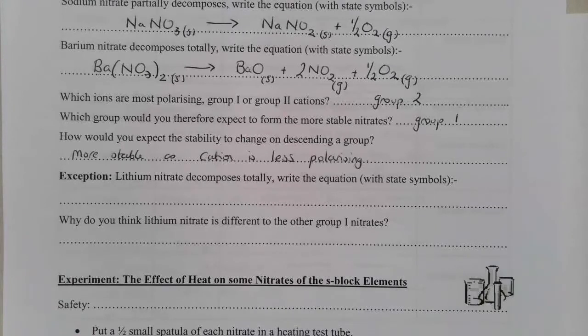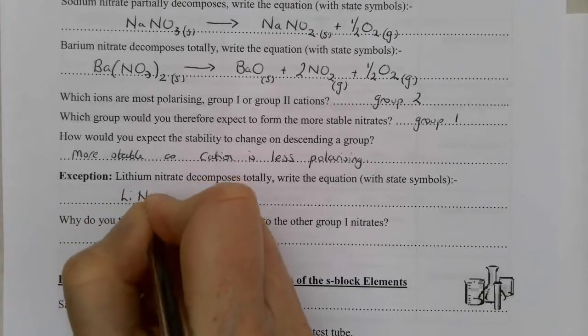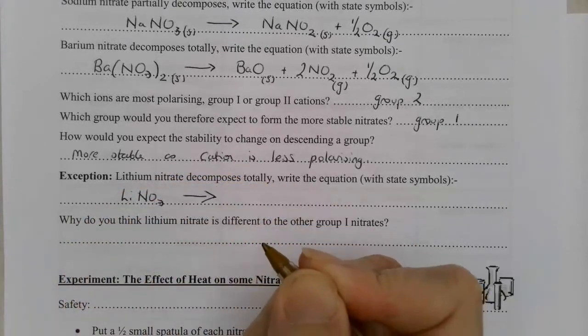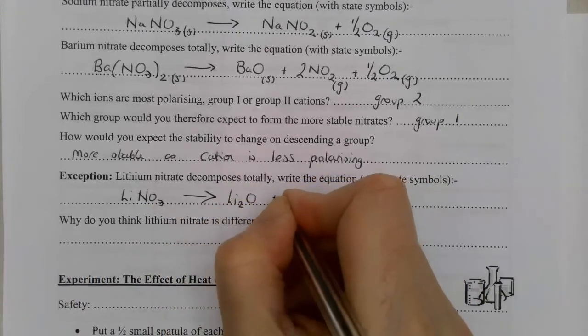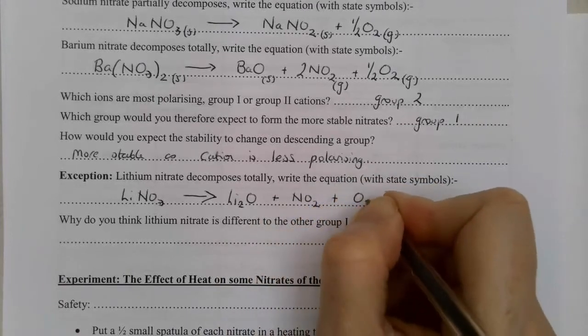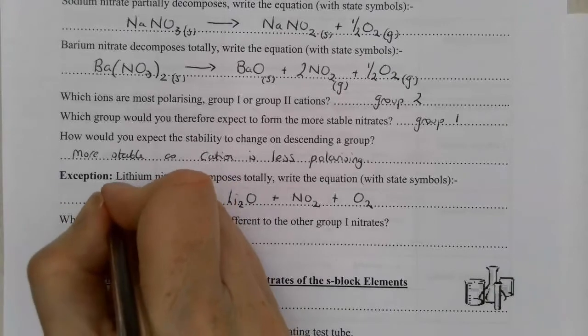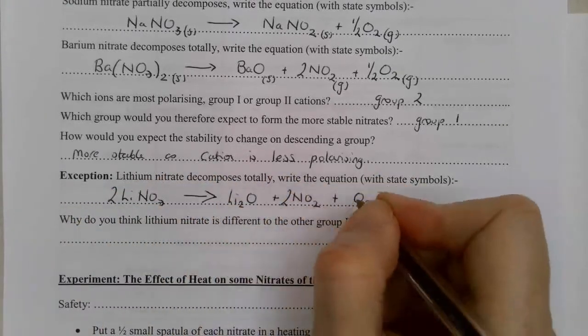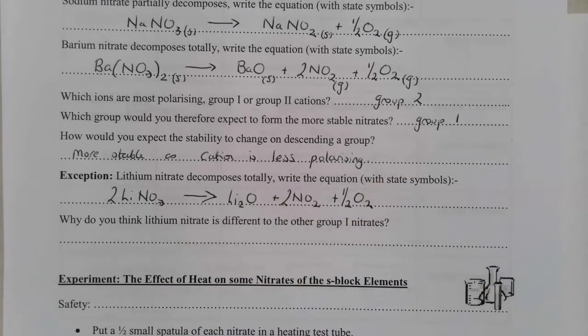The exception to this is lithium which totally decomposes. So I have lithium nitrate which is totally decomposing to lithium oxide and nitrogen dioxide and oxygen. Again it needs to be balanced up so I'm going to put 2 there, 2 and a half. Again I could go through and times everything up if I wanted to.